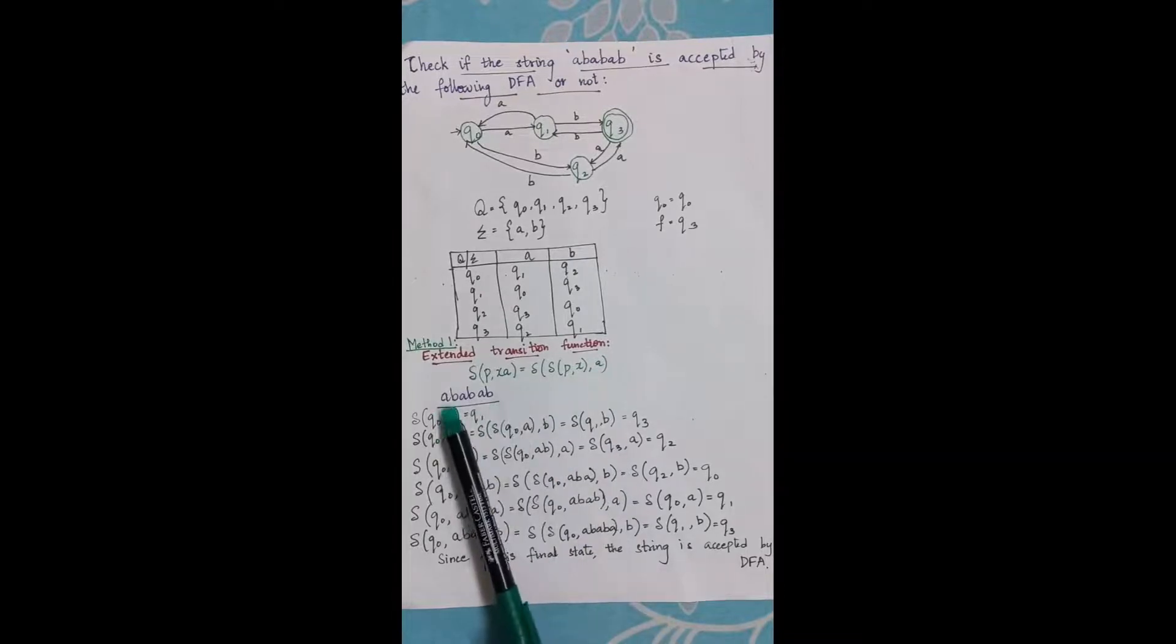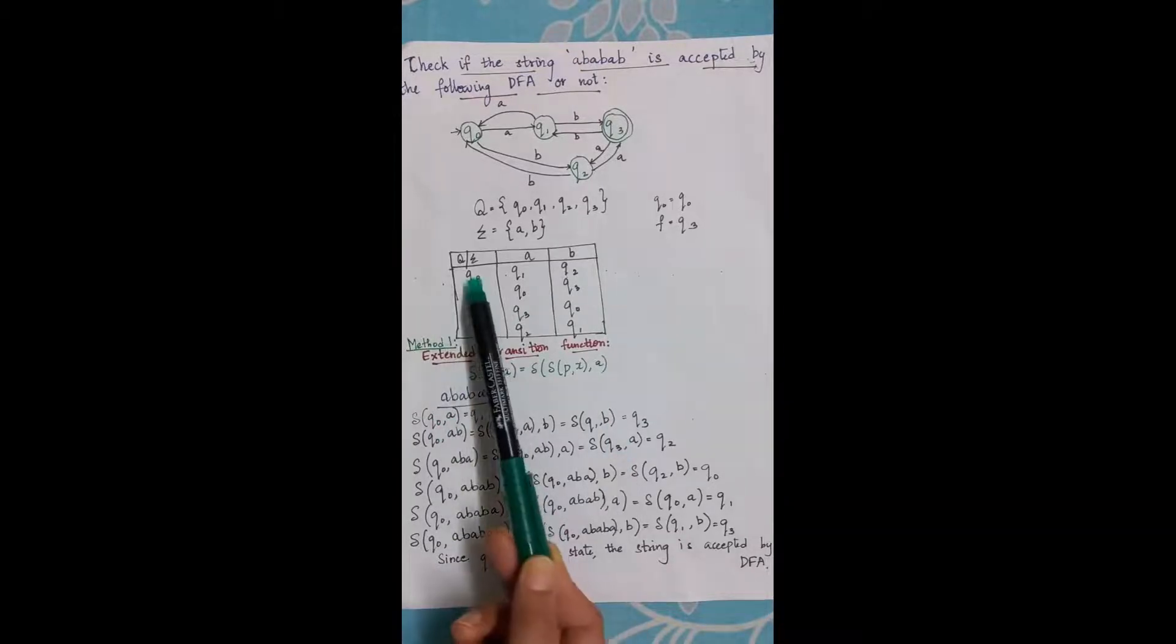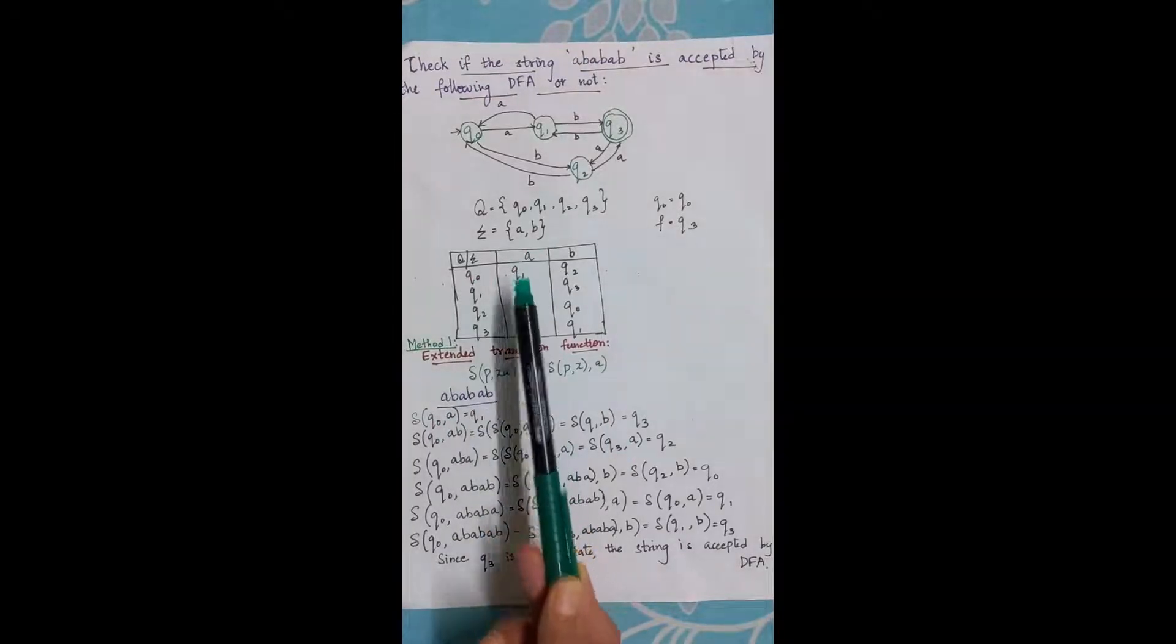Now let us consider the string ababab. First of all, I will take the start state and the first alphabet. So delta q0 comma a is equal to q1.